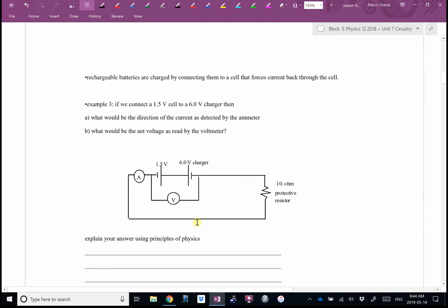So far, so good? What about rechargeable batteries? Well, rechargeable batteries, what we actually end up doing is we connect them to another cell or power source, voltage source, that forces current backwards through the cell. If I connect a 1.5-volt battery to a 6-volt charger, then, first of all, what direction do you think the current will be going through this ammeter? Will the current be going to the right, or will the current be going to the left? And your hint is, which way is downhill?